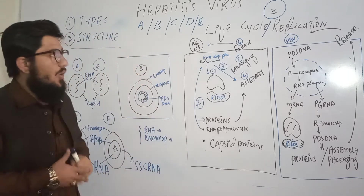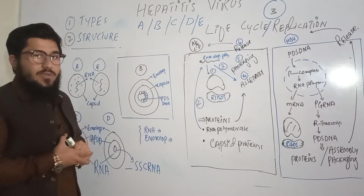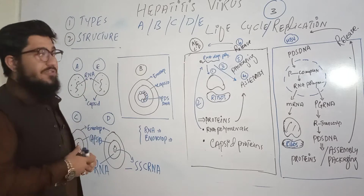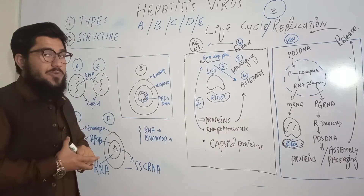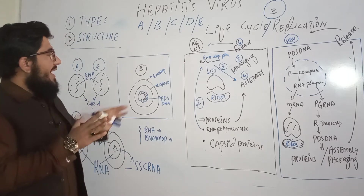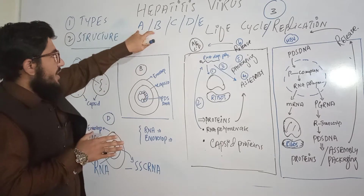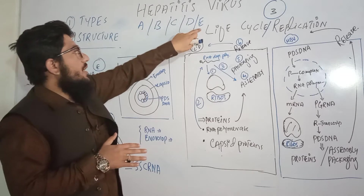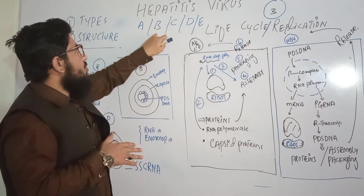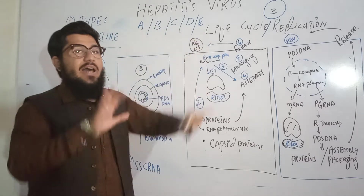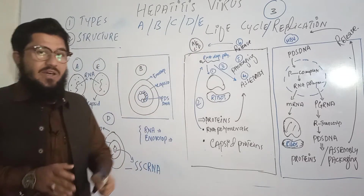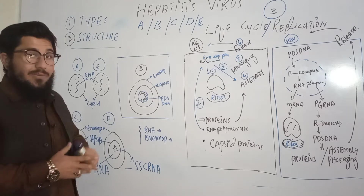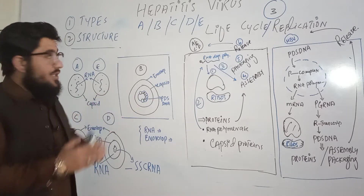Starting with the first point — the types — we have hepatitis A, B, C, D, and E: five types of hepatitis viruses.